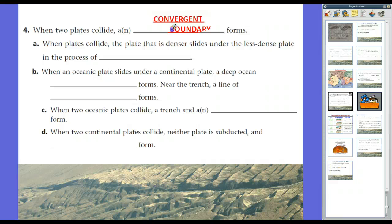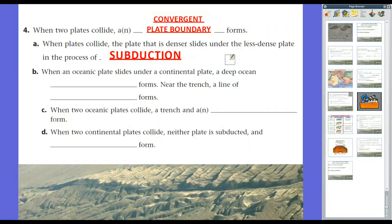When two plates collide, we have a convergent plate boundary. When plates collide, the denser plate goes under — and the oceanic crust is always denser because water sitting on top pushes down and makes it more dense. The oceanic plates slide under the less dense plate through a process called subduction — 'sub' meaning going under. As a result, we get earthquakes, volcanoes, and mountains. When an oceanic plate slides underneath a continental plate, a deep ocean trench forms, and near the trench a line of volcanoes forms.